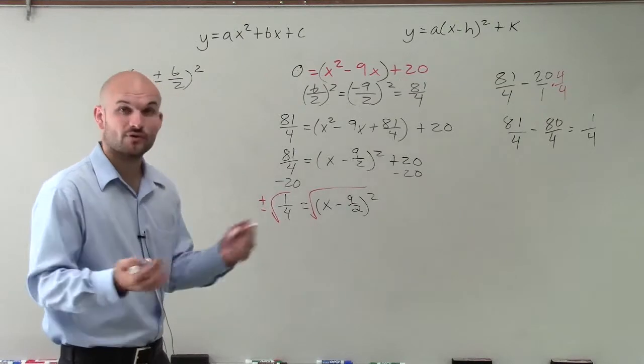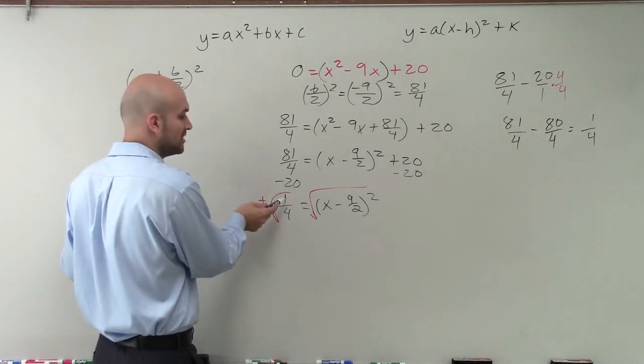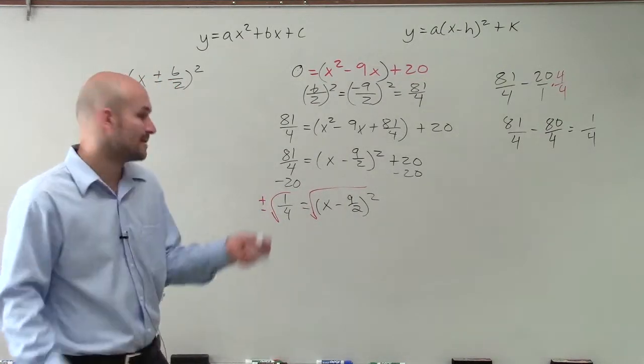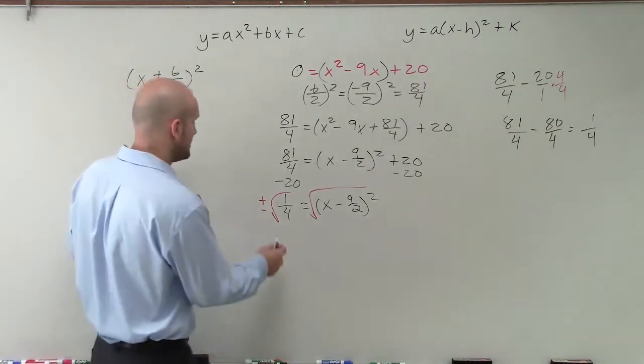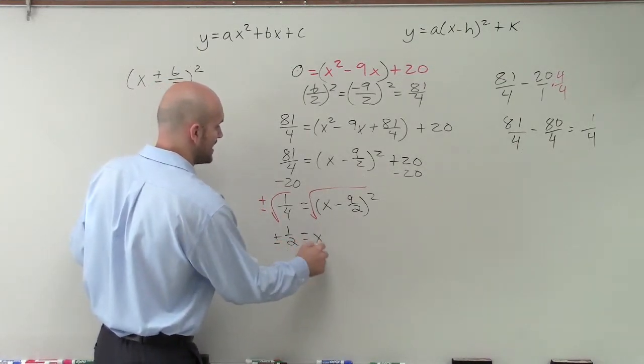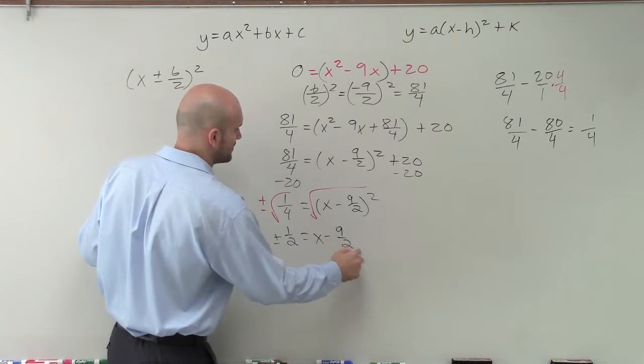Well, the square root of 1 fourth is going to be plus or minus 1 half. You could also take the square root of the numerator and the denominator separately. By taking them together, you notice that 1 half times 1 half gives us 1 fourth. But we need to make sure we include the positive and the negative equals x minus 9 halves.